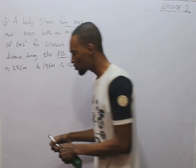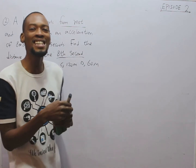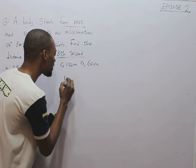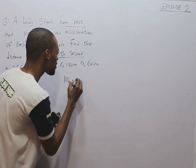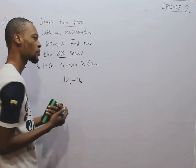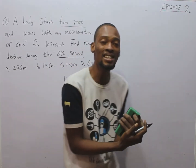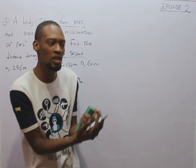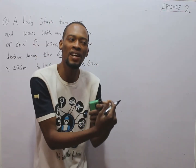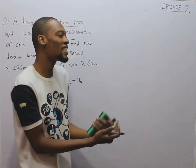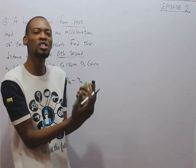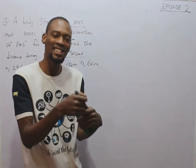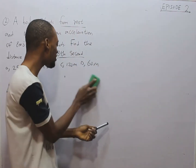If I say find the distance covered during the 10th second, it simply means distance covered in 10 seconds minus distance covered in 9 seconds. If I say find the distance covered during the 9th second, it means distance covered in 9 seconds minus distance covered in 8 seconds. If I say distance traveled during the 20th second, it is distance in 20 seconds minus distance in 19 seconds. Very, very important.